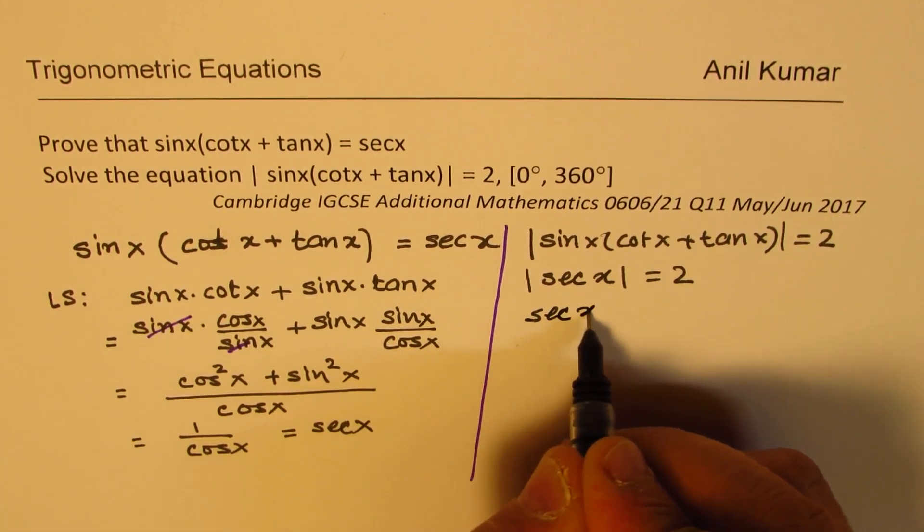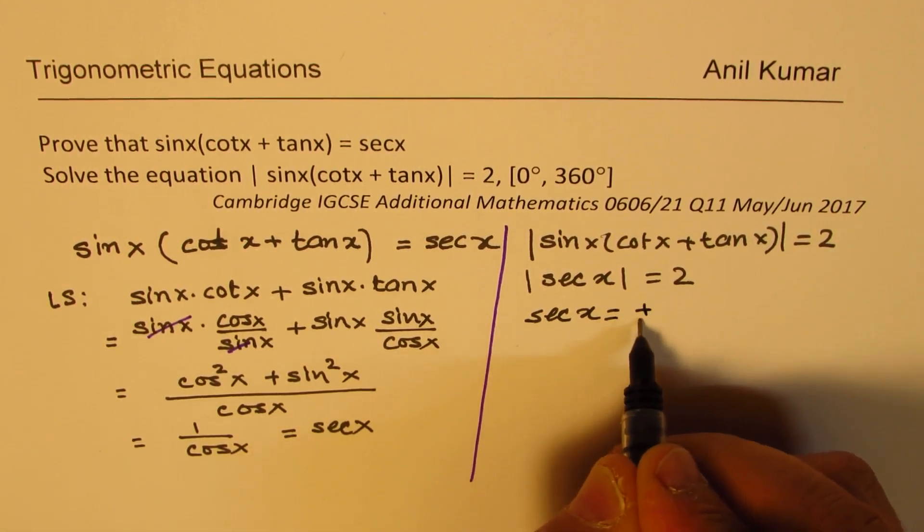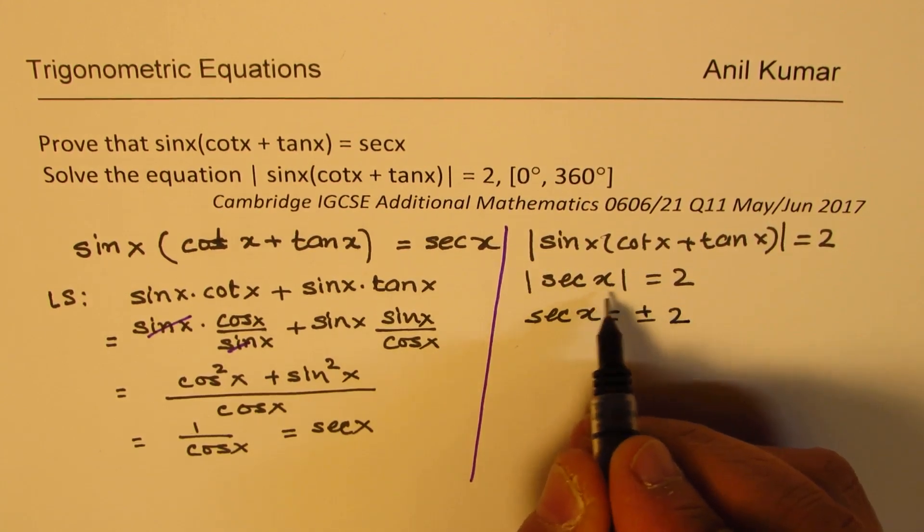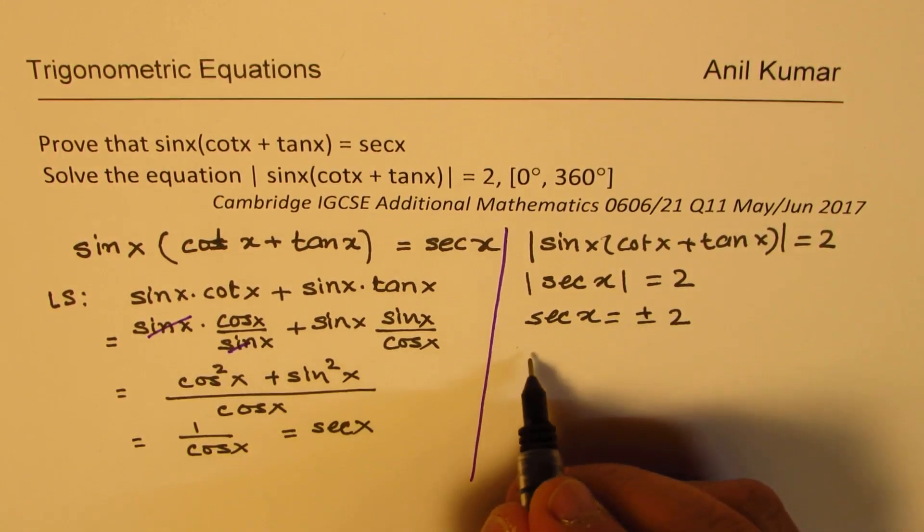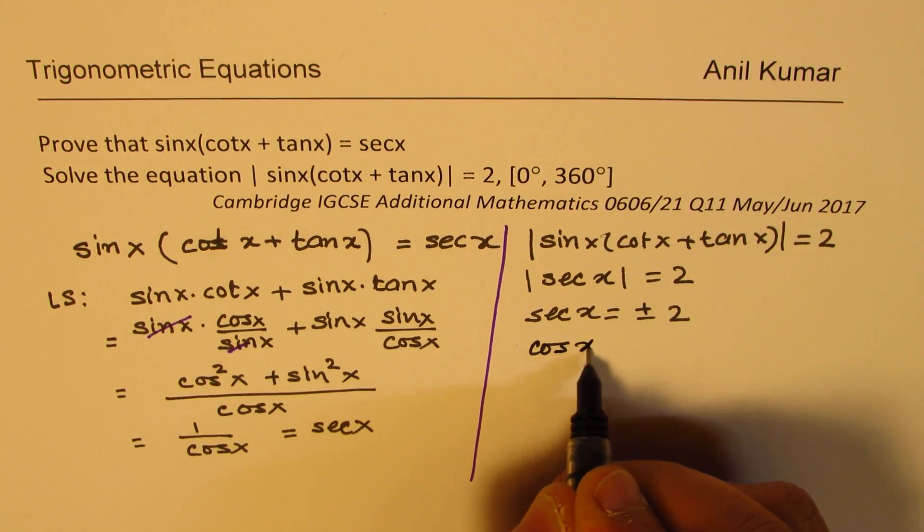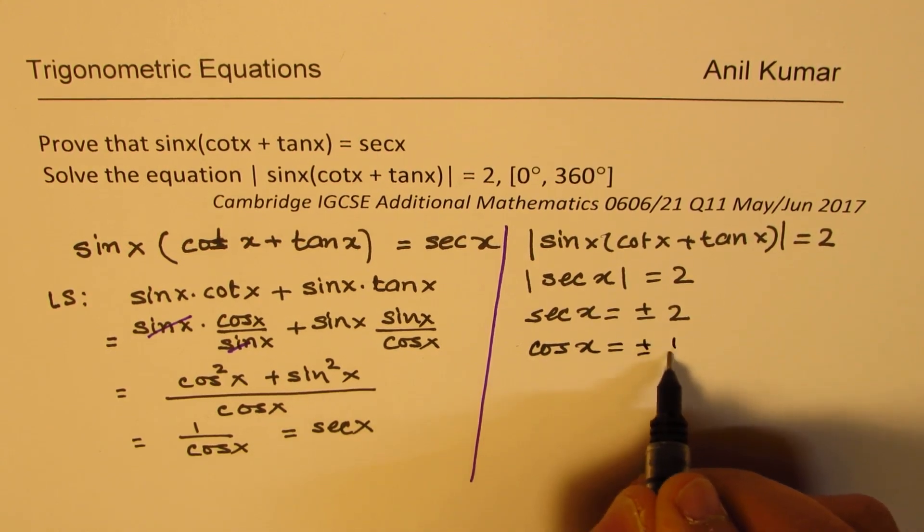Now when we say absolute value of secant x is 2, that means secant x is equal to plus or minus 2, right? So because the absolute value will be positive for your negative 2.